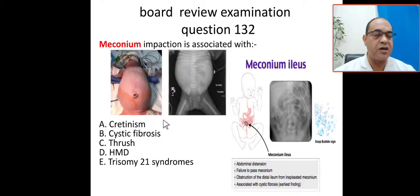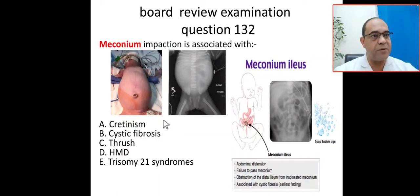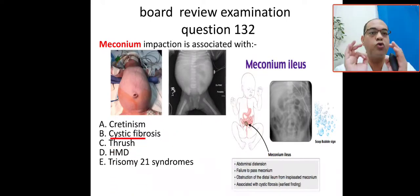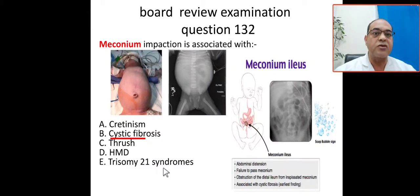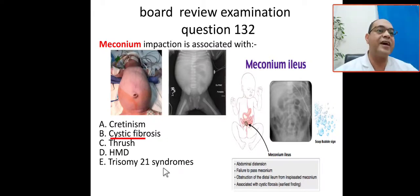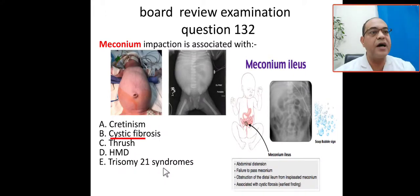Cretinism, which is hypothyroidism, is commonly associated with abdominal distension, constipation, and umbilical hernia — but that is not the answer here. Cystic fibrosis is the correct answer. Candidiasis or thrush is not the case. HMD, which is hyaline membrane disease or RDS, is not the answer. Trisomy 21, or Down syndrome, is associated with duodenal atresia — not meconium ileus.